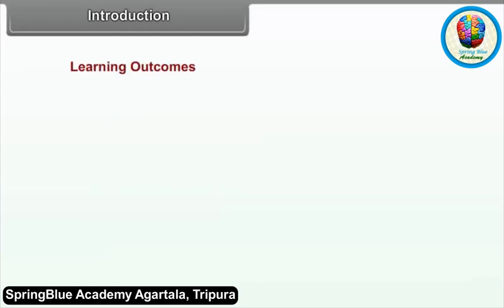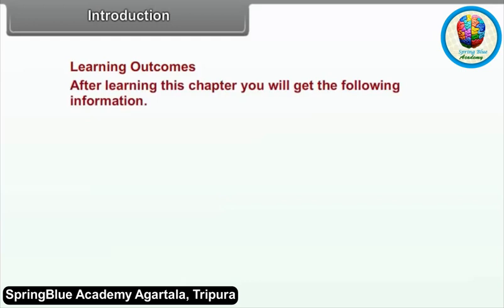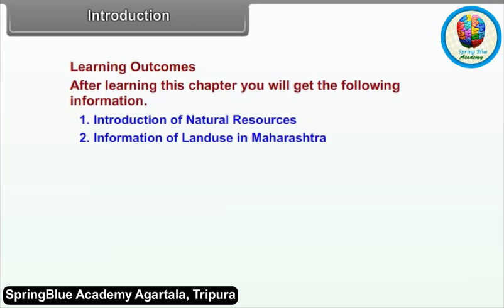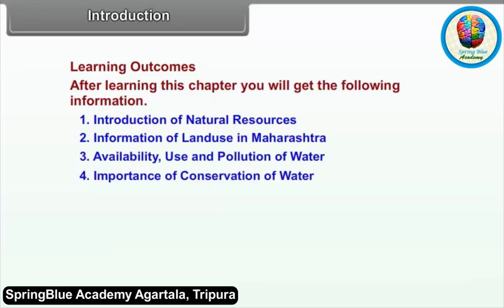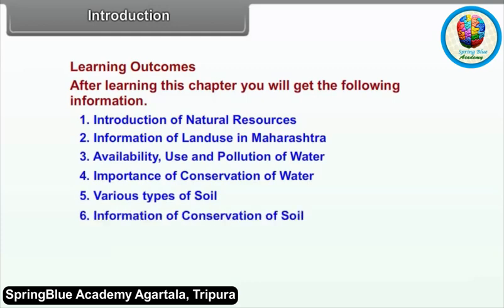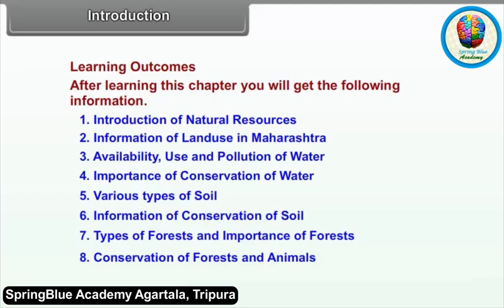Learning Outcomes: After learning this chapter, you will get the following information: 1. Introduction of Natural Resources, 2. Information of Land Use in Maharashtra, 3. Availability, Use and Pollution of Water, 4. Importance of Conservation of Water, 5. Various Types of Soil, 6. Information of Conservation of Soil, 7. Types of Forests and Importance of Forests, 8. Conservation of Forests and Animals, 9. Distribution of Minerals, 10. Need of Conservation of Minerals.